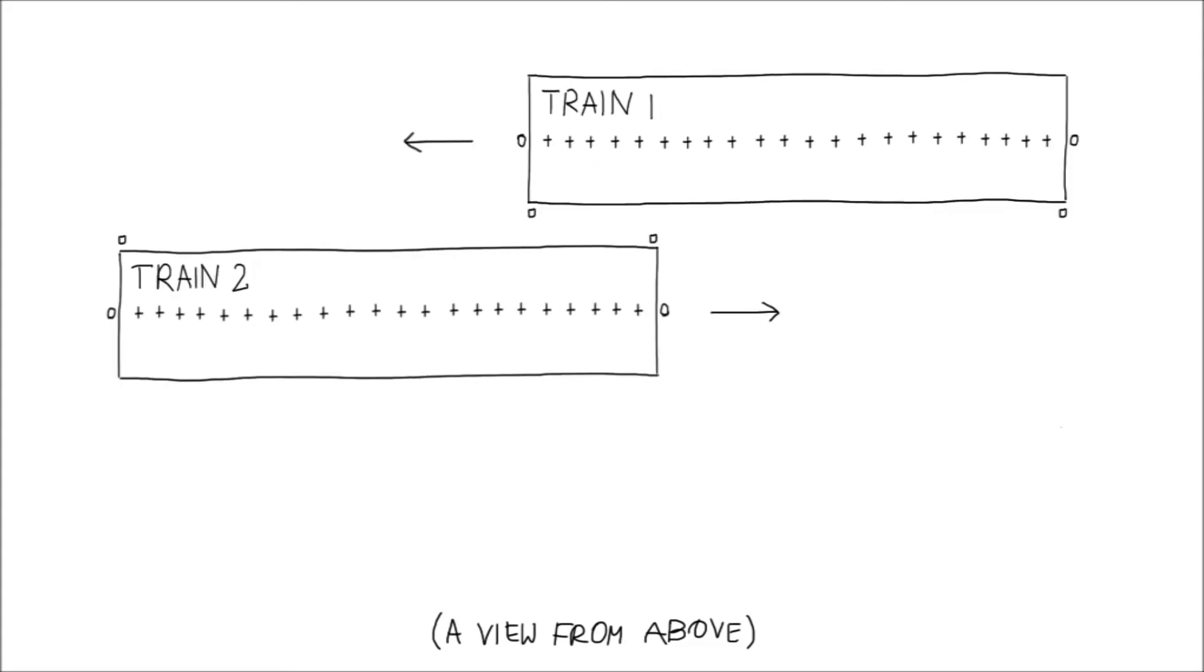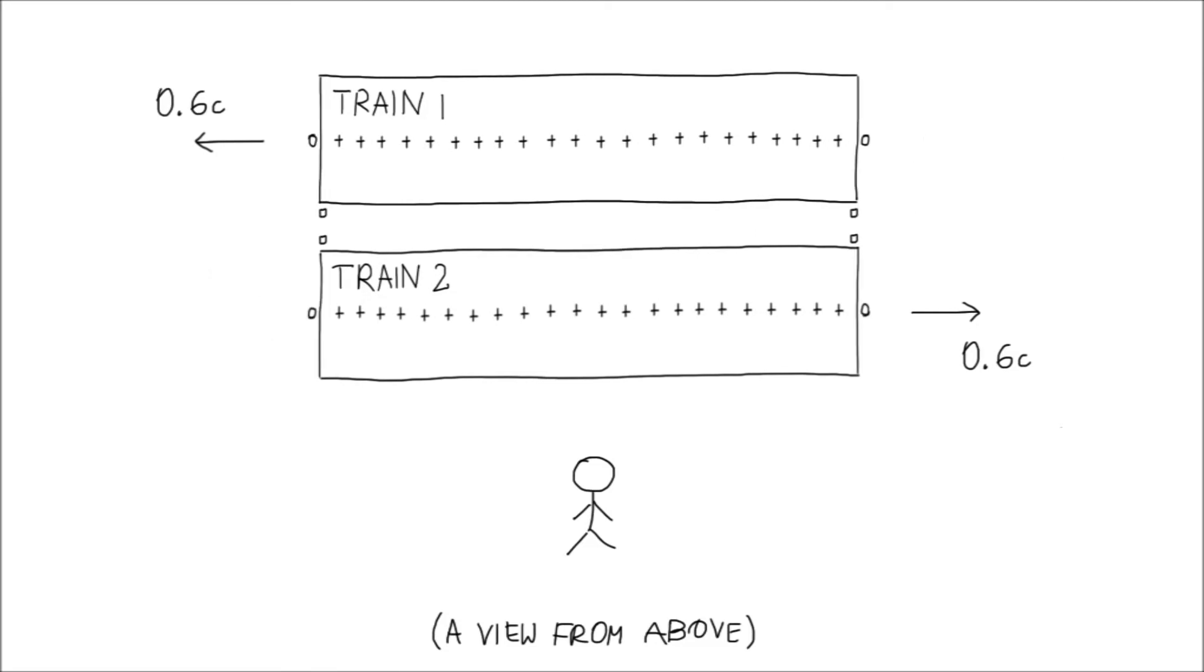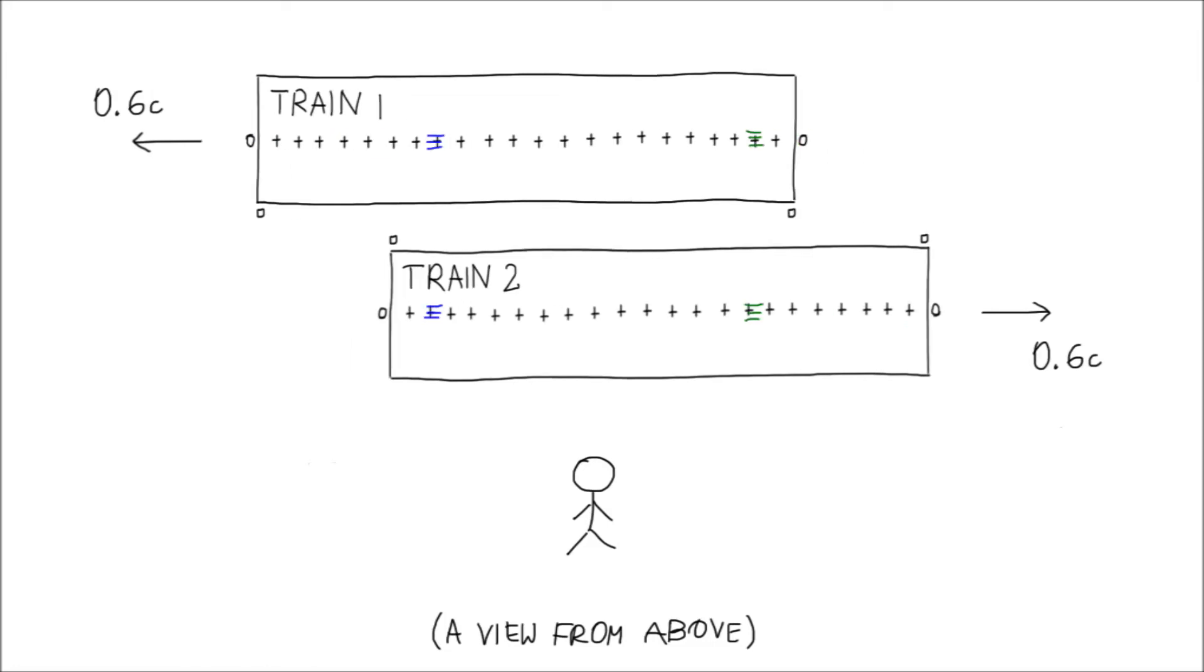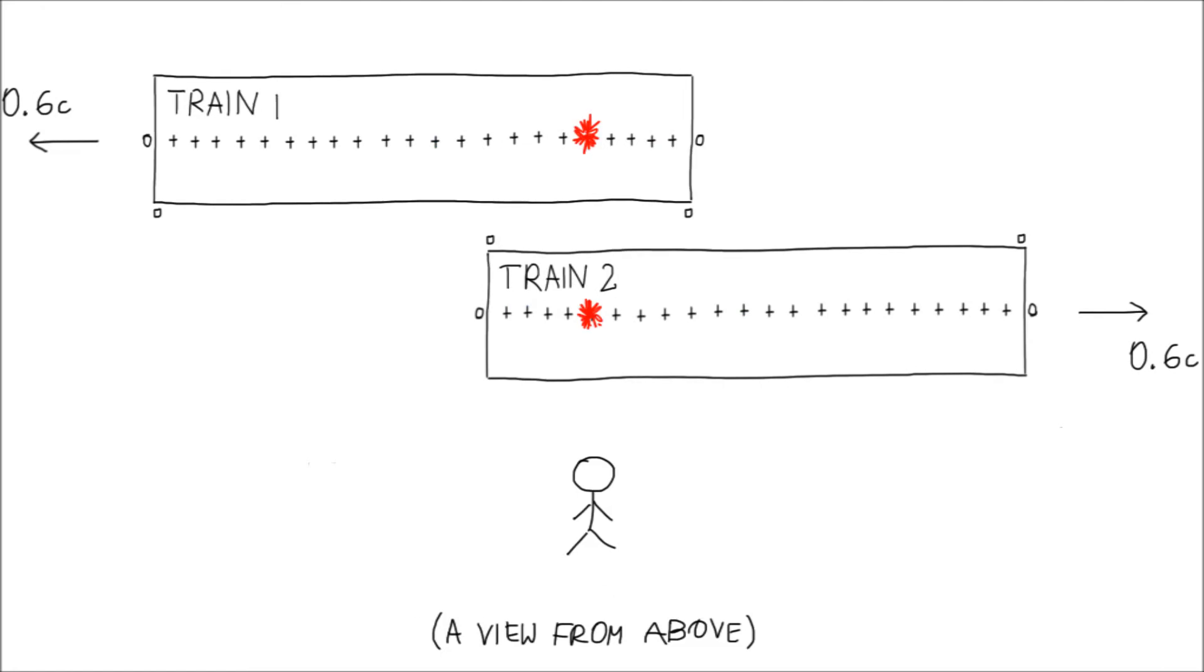Let the two trains move in the opposite directions with a speed close to the speed of light. You observe them as they get closer. Eventually, they are next to each other right in front of you. You observe that in both trains, the front and the rear lamps make a flash of light at the same time. The light beams travel while the trains move beneath them and meet right in front of you.